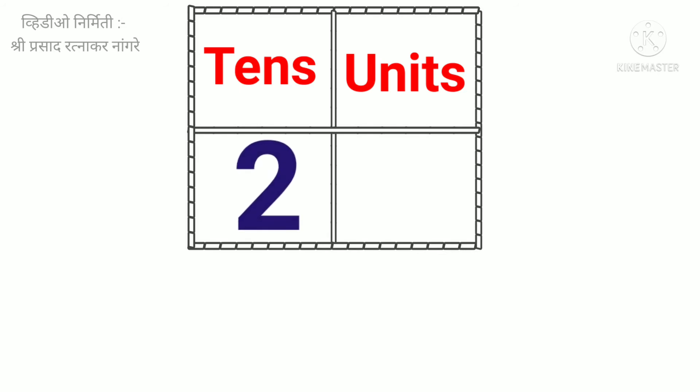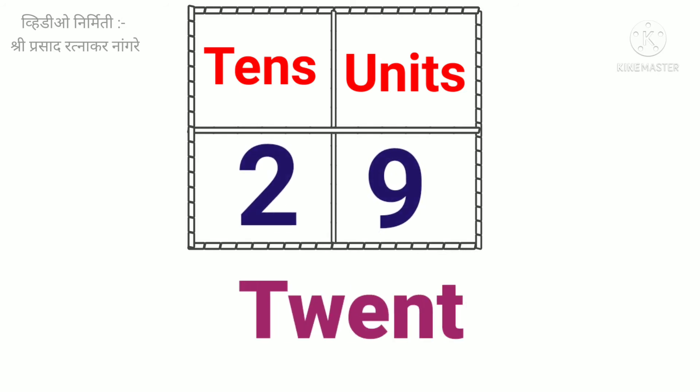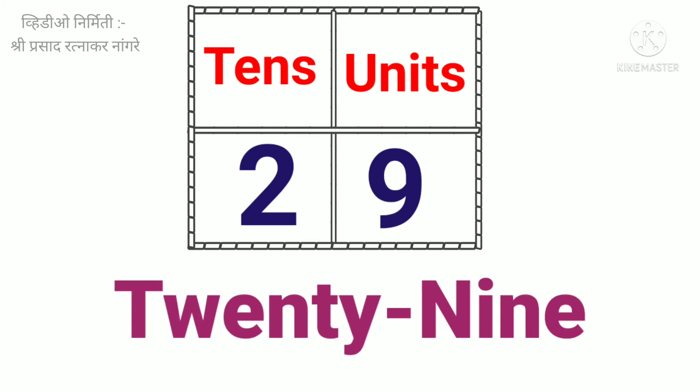Two tens. Nine units. Twenty-nine. T-W-E-N-T-Y-N-I-N-E. Twenty-nine.